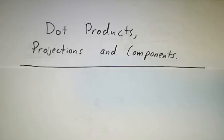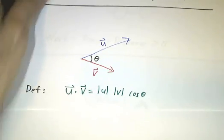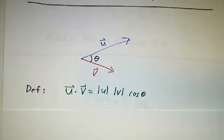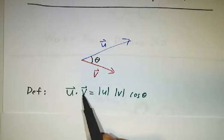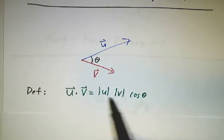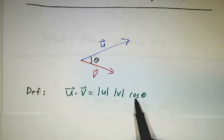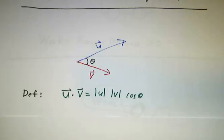In this video, we're going to learn about dot products, projections, and components. The definition of a dot product is pretty straightforward. You take two vectors and define the dot product of vectors u and v to be the length of the first vector times the length of the second vector times the cosine of the angle between them. It's a pretty simple formula, but you might think: where the heck did that come from?